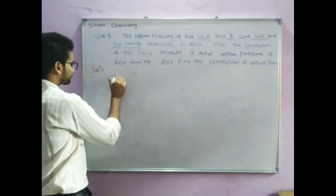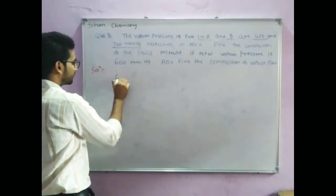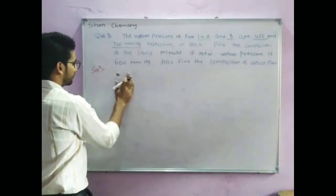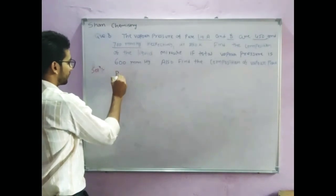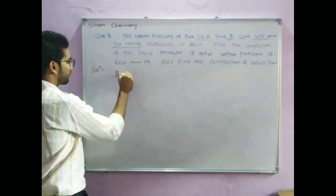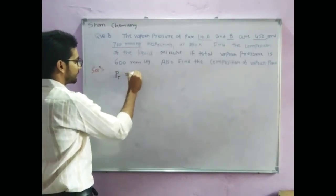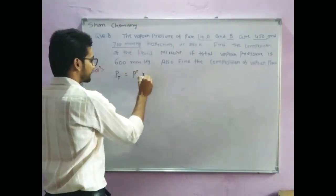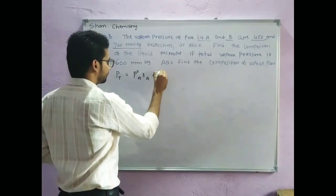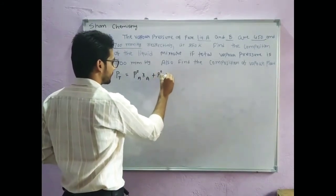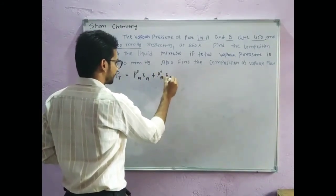The formula, according to Raoult's Law, is: P_total is equal to P°_A times X_A plus P°_B times X_B.